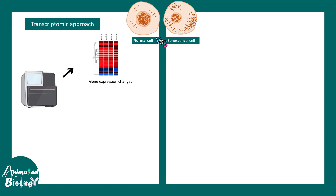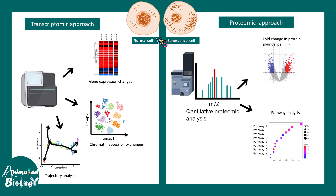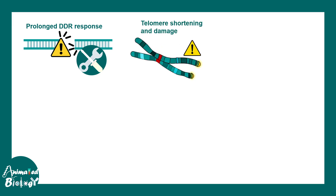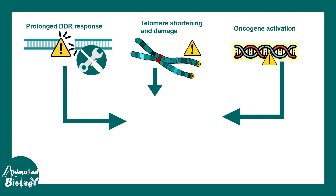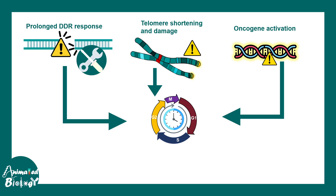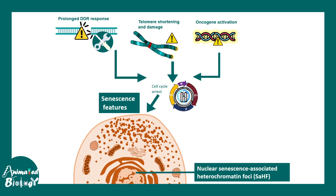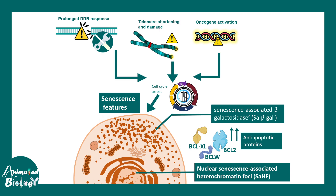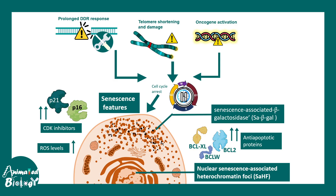Transcriptomic and proteomic approaches have found several drivers of senescence. Inducers include prolonged double-strand DNA break response, telomere shortening and damage, and oncogene activation — all of which can lead to arrest of cell division, which is a key feature of senescence. Senescence features include nuclear heterochromatin foci, senescence-associated beta-galactosidase, upregulation of anti-apoptotic proteins such as BCL-XL, BCL2, and BCLW, upregulated CDK inhibitors, and elevated ROS levels, which are key drivers of the senescence process and cellular aging.